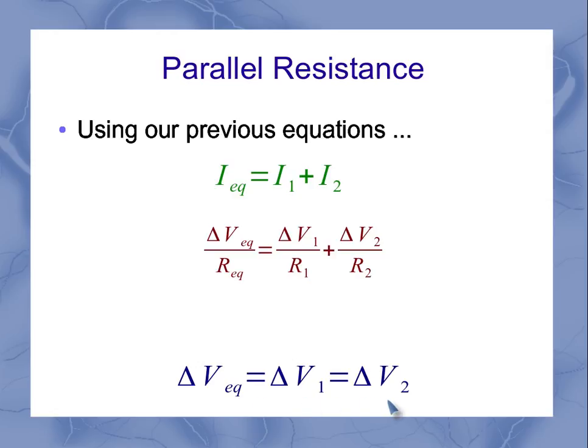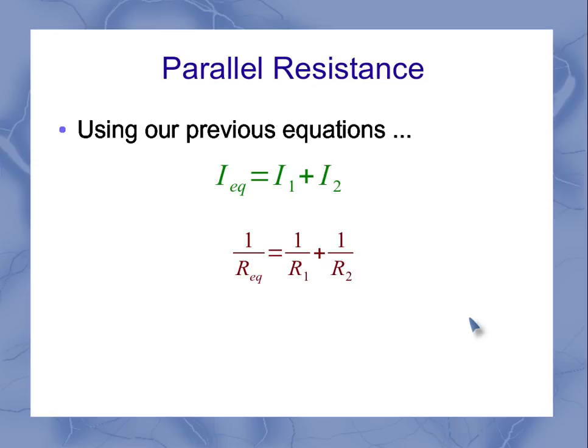But remember, we just found that the voltages were all the same. So that means in this equation, I could divide by the voltage, and it would cancel out on each one of those terms, leaving me with just the inverses. That's a perfectly acceptable way of expressing the equivalent resistance, but we often go a step further and actually solve for the equivalent resistance by seeing it's the inverse of the sum of the inverses.